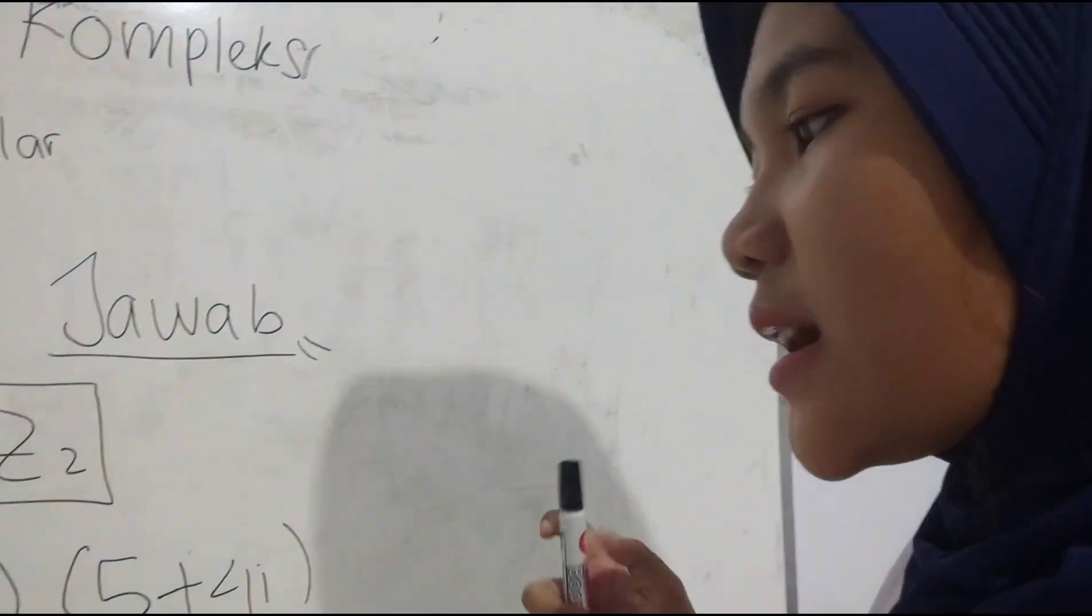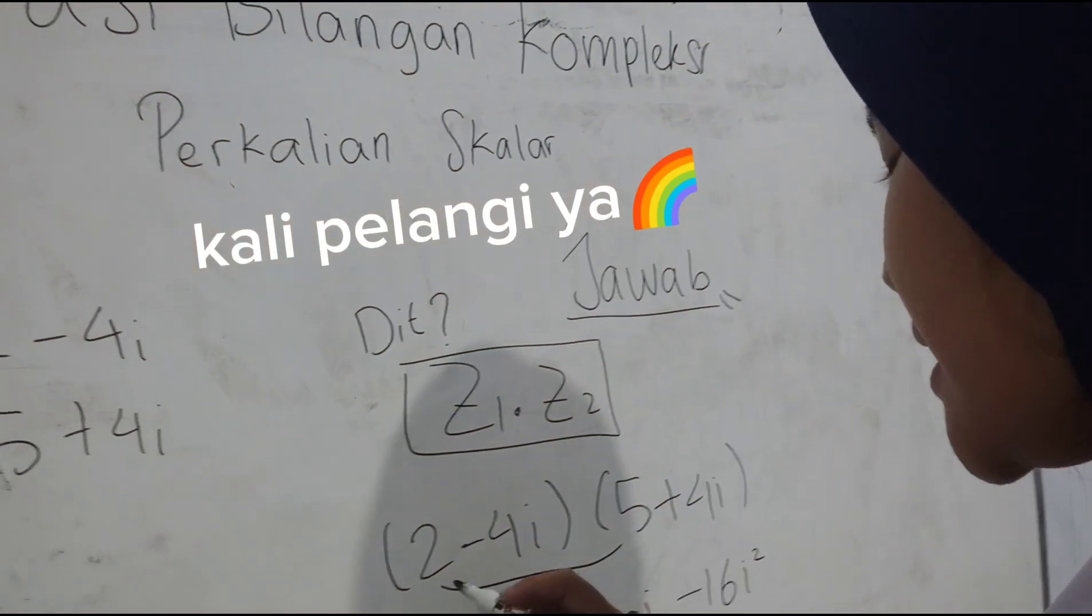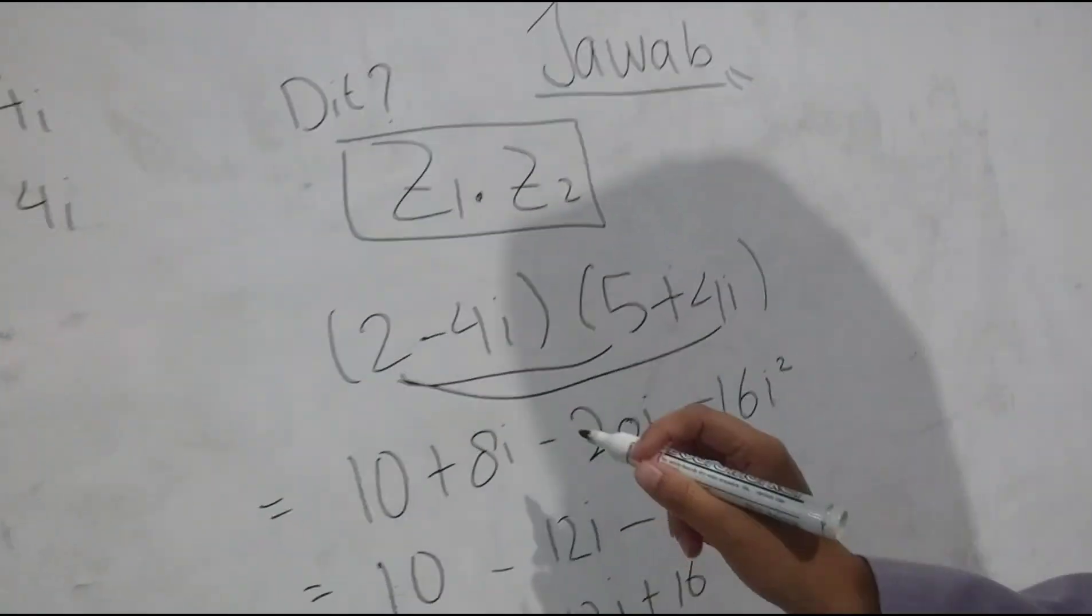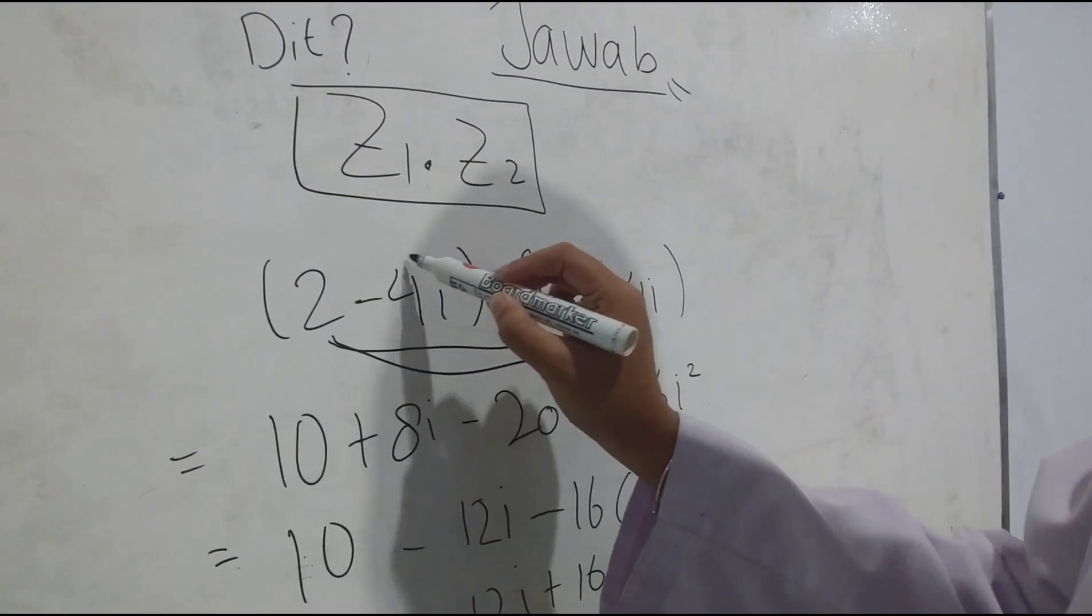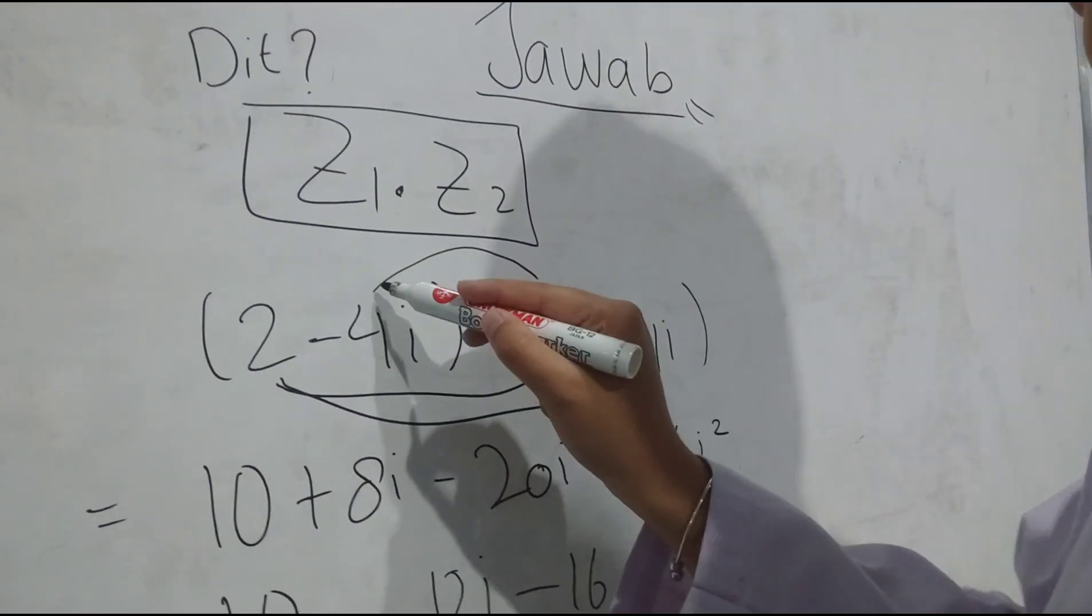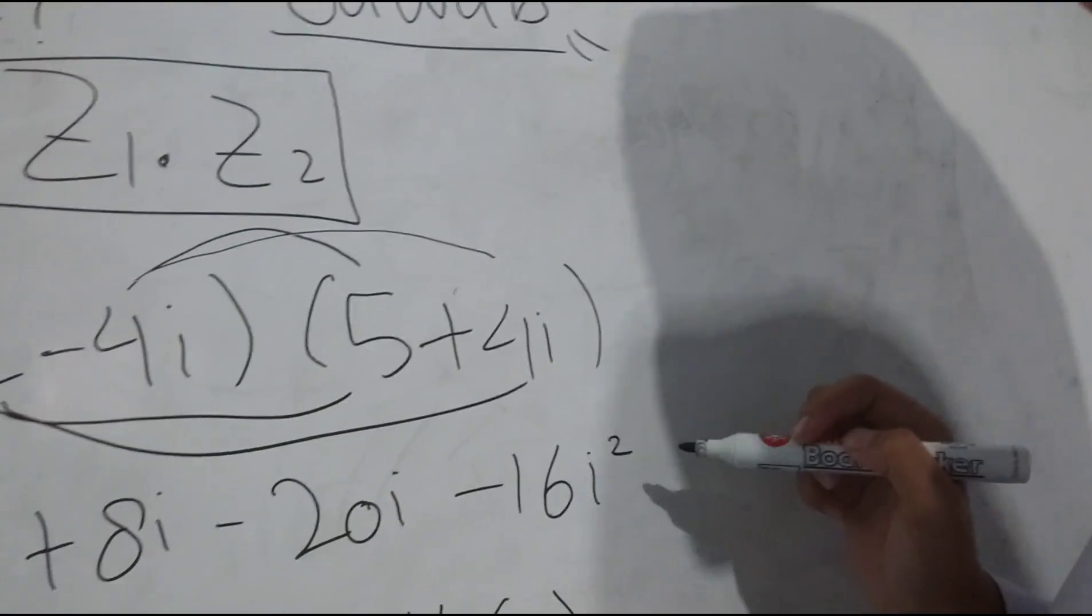Langsung kita eksekusi. Nah kita kali silang ya: 2 × 5 = 10, 2 × 4i = 8i, -4i × 5 itu -20i, -4i × 4i = -16i kuadrat.